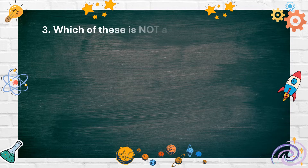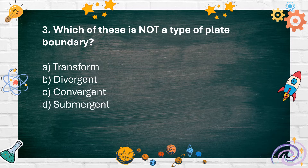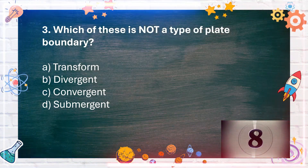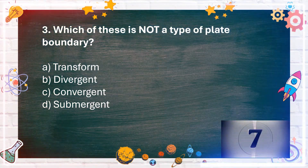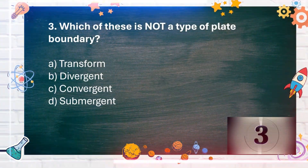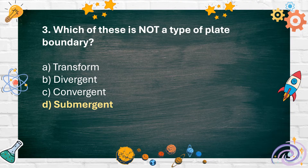Number 3. Which of these is not a type of plate boundary? A. Transform. B. Divergent. C. Convergent. D. Submergent. The answer is D. Submergent.